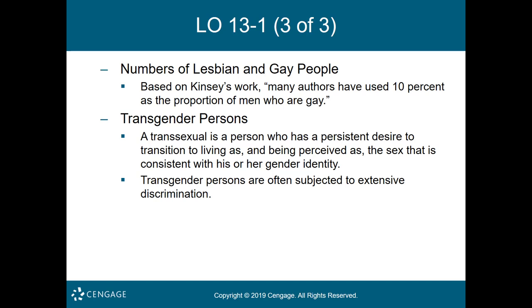A drag queen or drag king is one who wears clothing intended for the opposite gender for entertaining other people. Bigender is one whose gender identity is both female and male at the same time. Agender is one who has no gender identity at all. Cisgender is one whose gender identity matches the sex assigned at birth.